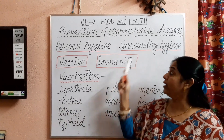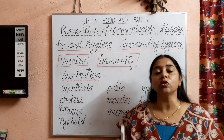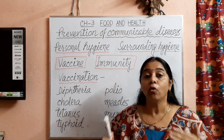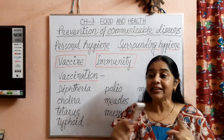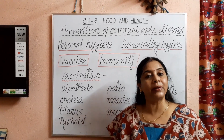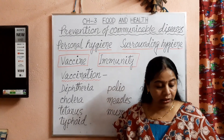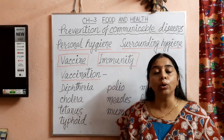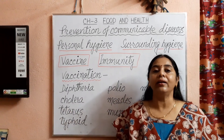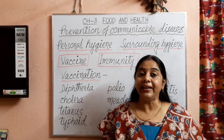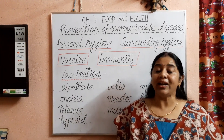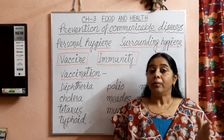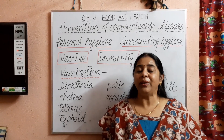Now let us come to surrounding hygiene. Children, it is also very important to keep our surroundings clean — the house where we live and its surroundings. The first point is we should keep our house clean. We should open the doors and windows of our house and make it airy, and we should let the sunlight enter into our houses, as sunlight kills the germs present in our house.